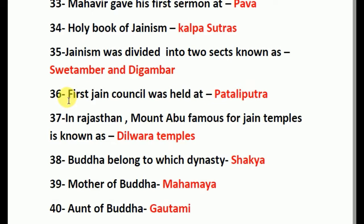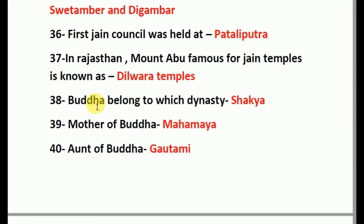Jainism was divided into two sects known as Shvetambara and Digambara. The first Jain Council was held at Pataliputra. In Rajasthan, Mount Abu is famous for Jain temples known as Dilwara Temple. Buddha belonged to which dynasty? The answer is Sakya.